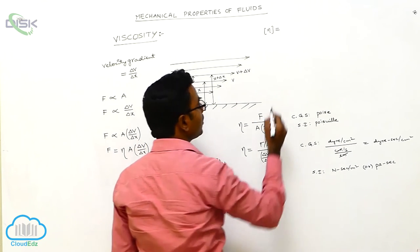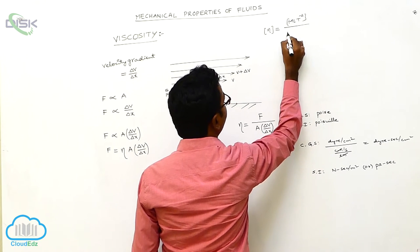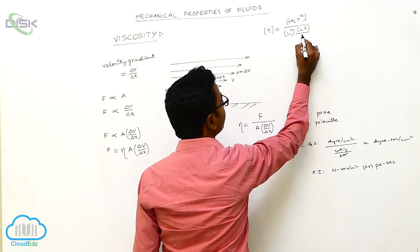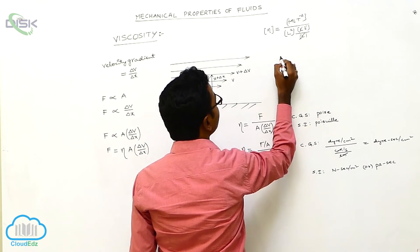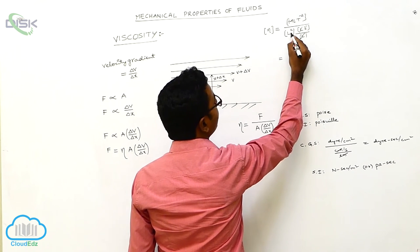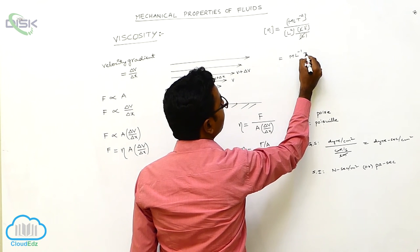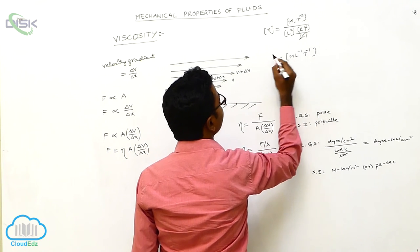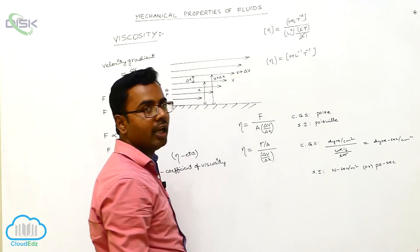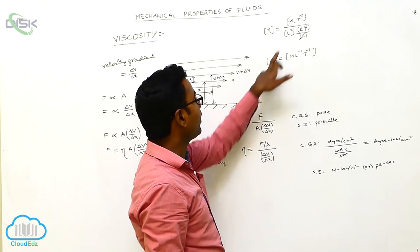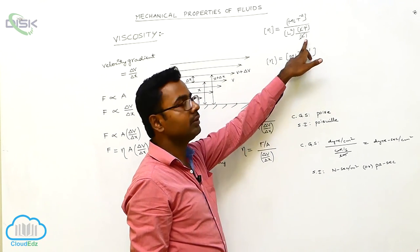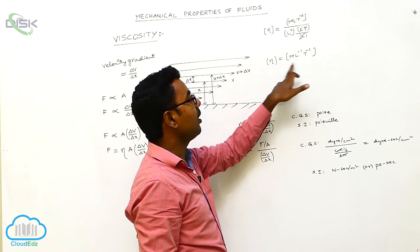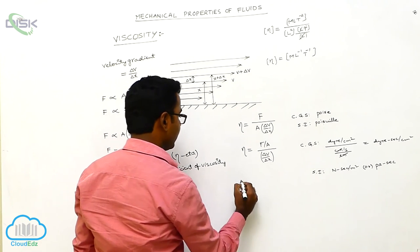The dimensional formula for the coefficient of viscosity is derived by substituting: force has dimensions [MLT⁻²], area [L²], velocity [LT⁻¹], and distance [L]. This gives [MLT⁻²] / ([L²] × [LT⁻¹/L]) = [MLT⁻²] / [L²T⁻¹] × L = [ML⁻¹T⁻¹]. So the dimensional formula for coefficient of viscosity is [ML⁻¹T⁻¹].